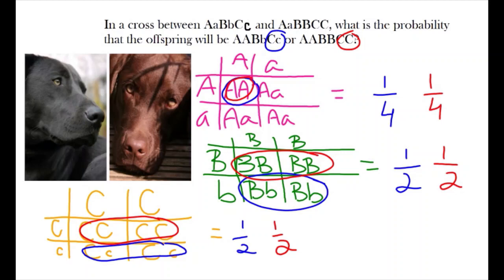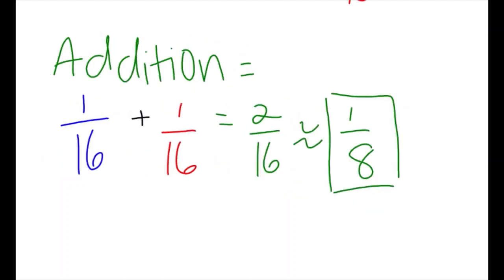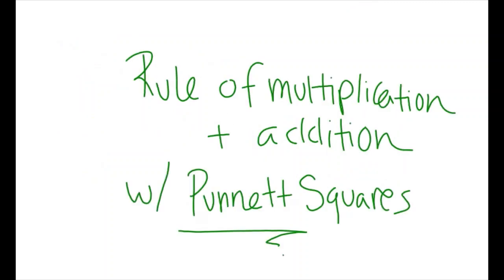Now that we have our probabilities of each allele, we need to invoke the rule of multiplication and addition. For the rule of multiplication, we multiply the respective probabilities of each allele combination. Then, invoking the rule of addition to see what is the probability of one or the other final genotype occurring, we get the final probability as one-eighth. I hope this video helped you to understand the rule of multiplication and addition and how they apply to Punnett squares.